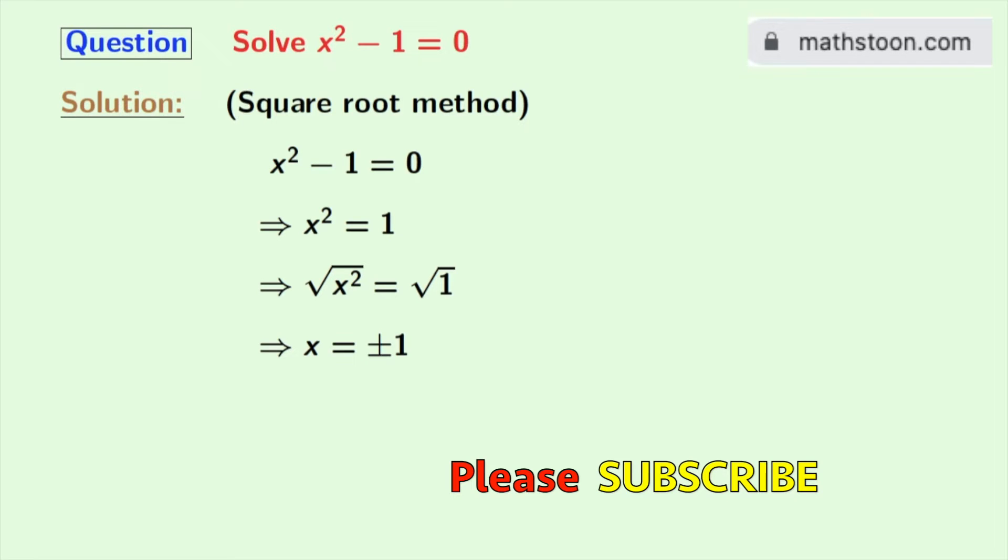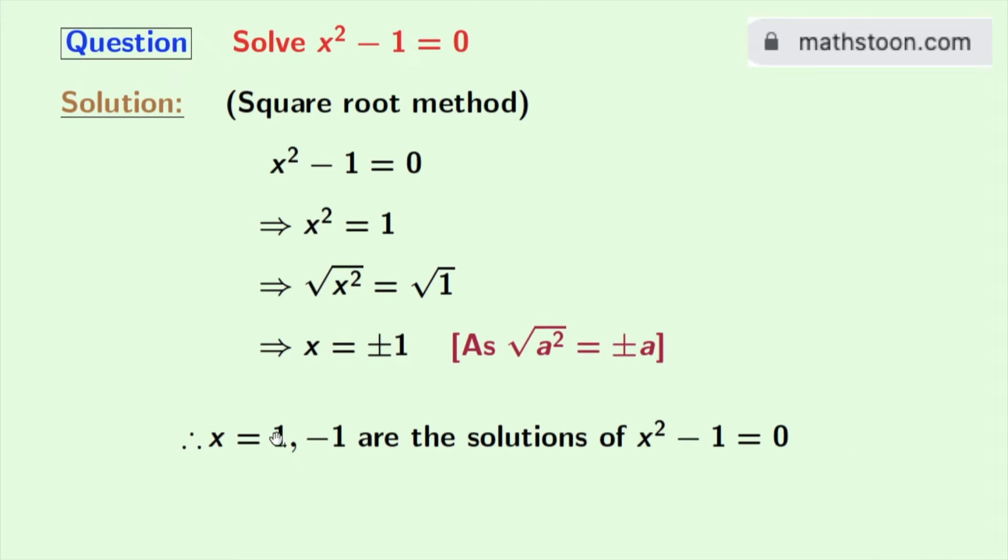After solving this, we will get x = ±1. As we know that √(a²) = ±a, here a is 1. So we get that x = 1 and -1. And this is the solution of the equation x² - 1 = 0.